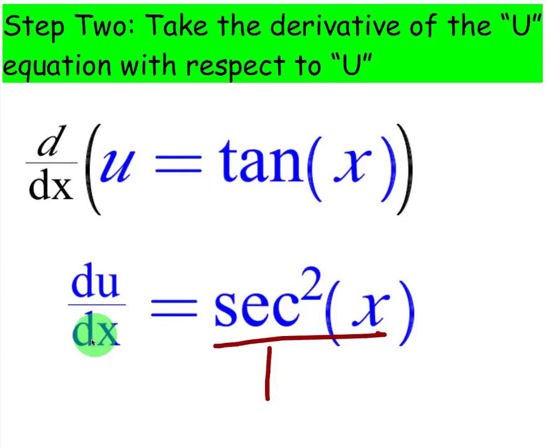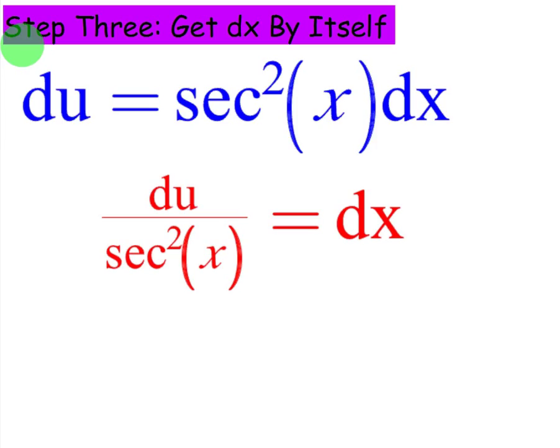So, cross-multiplying, you're going to get dx secant squared x equals step 3, get dx by itself, and then you'll divide both sides. Du over secant squared x equals dx.